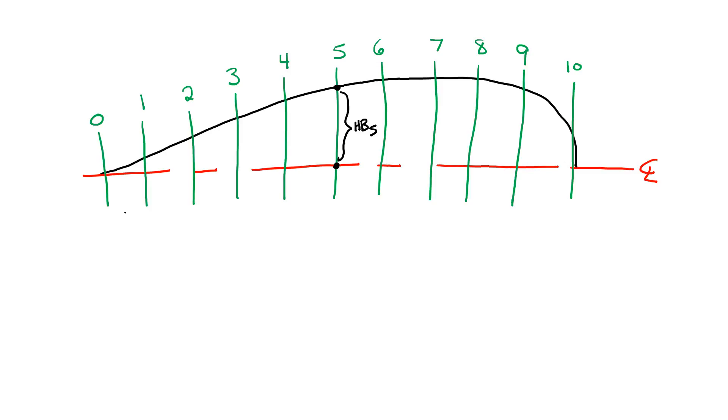To find my water plane area, I plug each of the half-breaths into the following equation: h divided by 3, where h is the distance between each of these stations. Then I have Simpson's multiplier. It starts out with a 1, multiplied by my first half-breath distance at station 0, plus 4, which is my next Simpson's multiplier, times my half-breath distance at station 1.